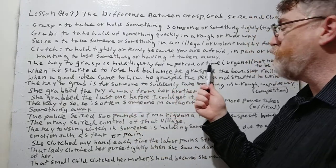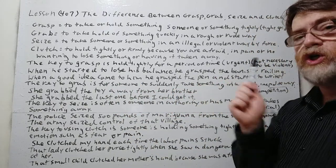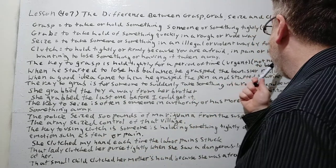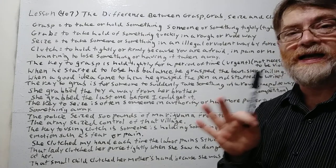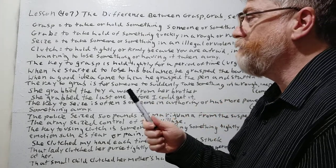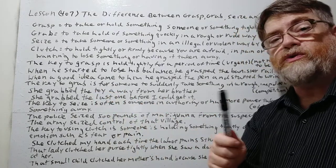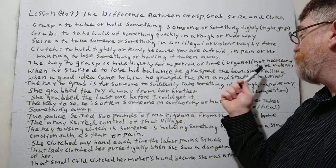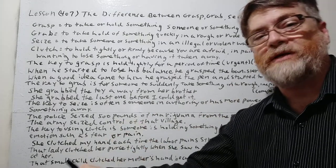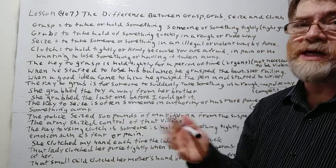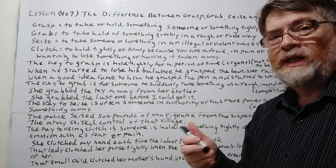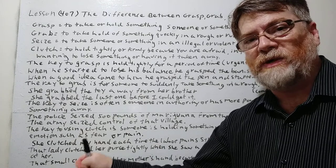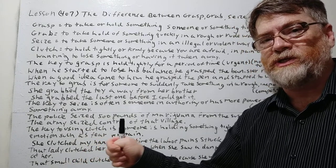The key to grasp is to hold tightly for a period of time. Usually it's an urgent situation when you grasp something, though not necessarily violent. For example: when he started to lose his balance, he grasped the banister railing — so he grabbed it and probably held it very tightly. You could say grab here too, but it's not violent at all; you take it quickly and hold it tightly once you get it in your hand.